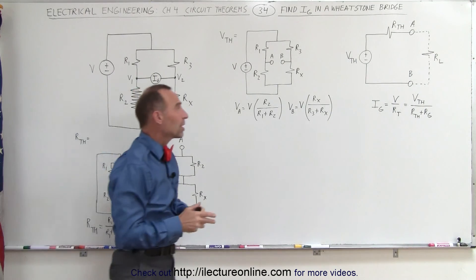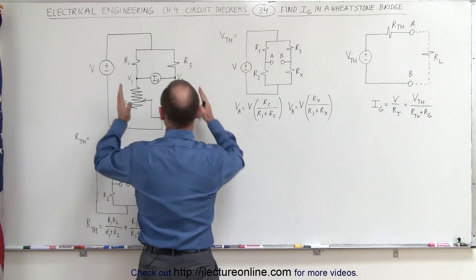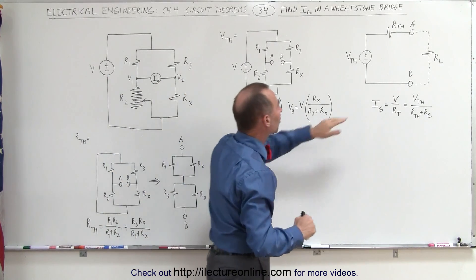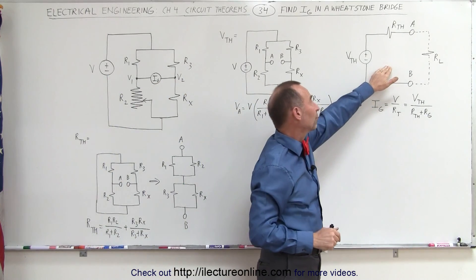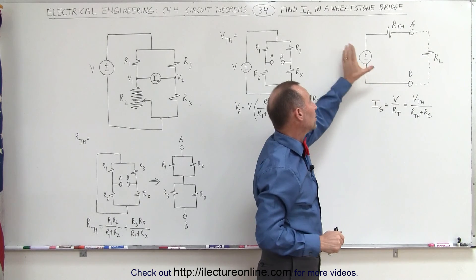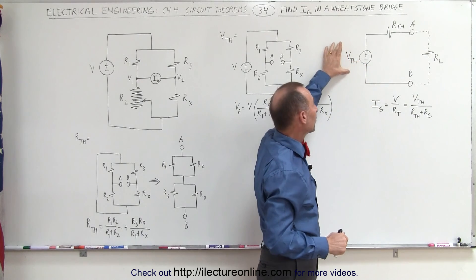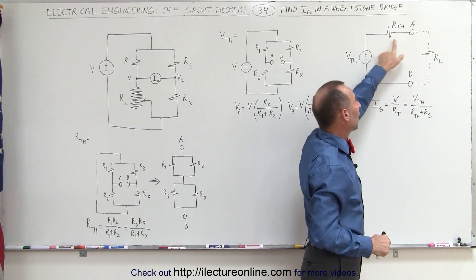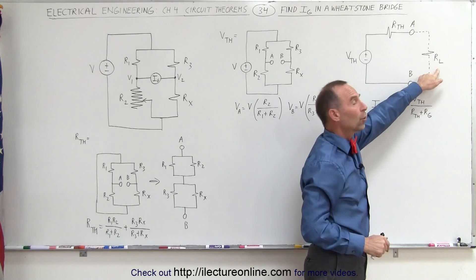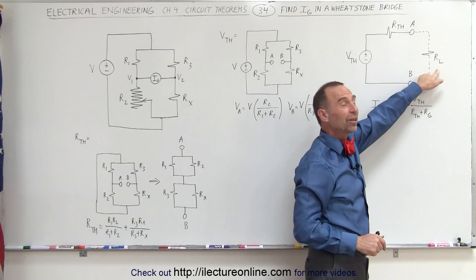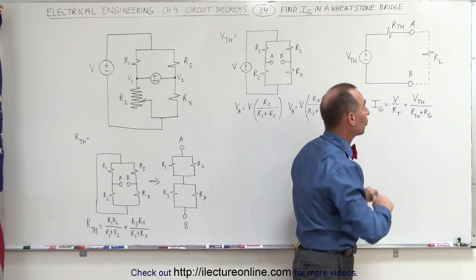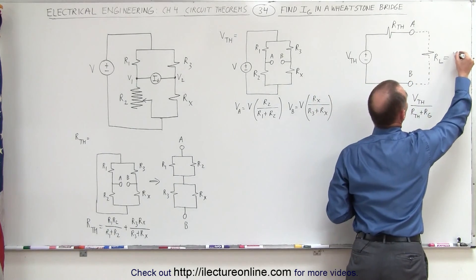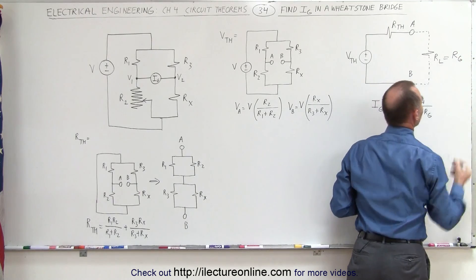When we go to the circuit over here, whatever the circuit is, it's a linear circuit. We can represent it by a Thevenin equivalent circuit, which means there's going to be a Thevenin voltage, a Thevenin resistance, and a load resistance. In this case, the load resistance is actually going to be equal to the resistance of the galvanometer.